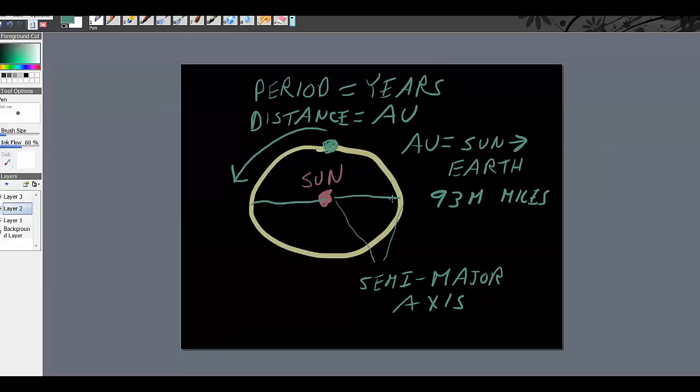And this distance is measured in AUs and one AU is the sun to earth distance and that happens to be 93 million miles. We're just going to call that distance an AU.